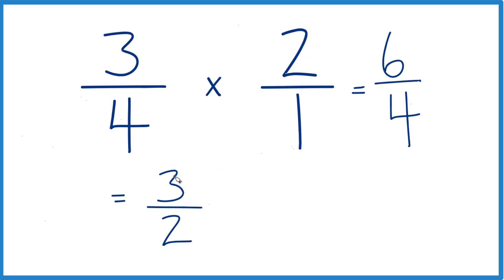This is an improper fraction. The numerator is larger than the denominator. Let's change it to a mixed number. 2 goes into 3, let's see, 1 times 2 is 2, and that will give us 1 left over. We keep the denominator the same. 1 and 1 half.